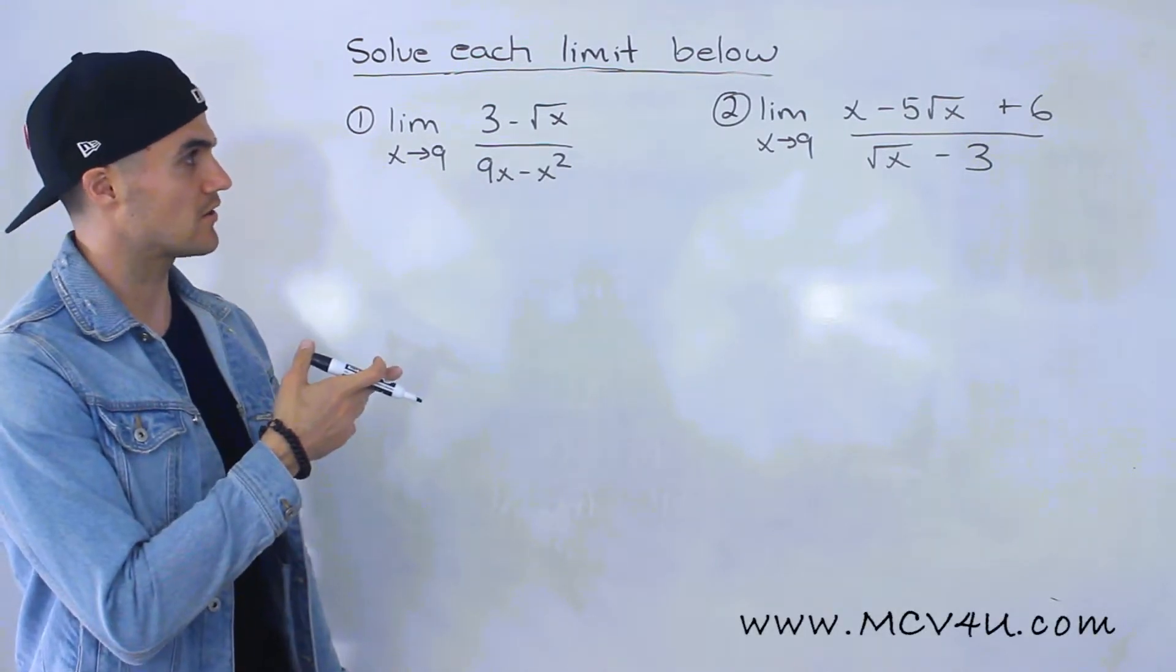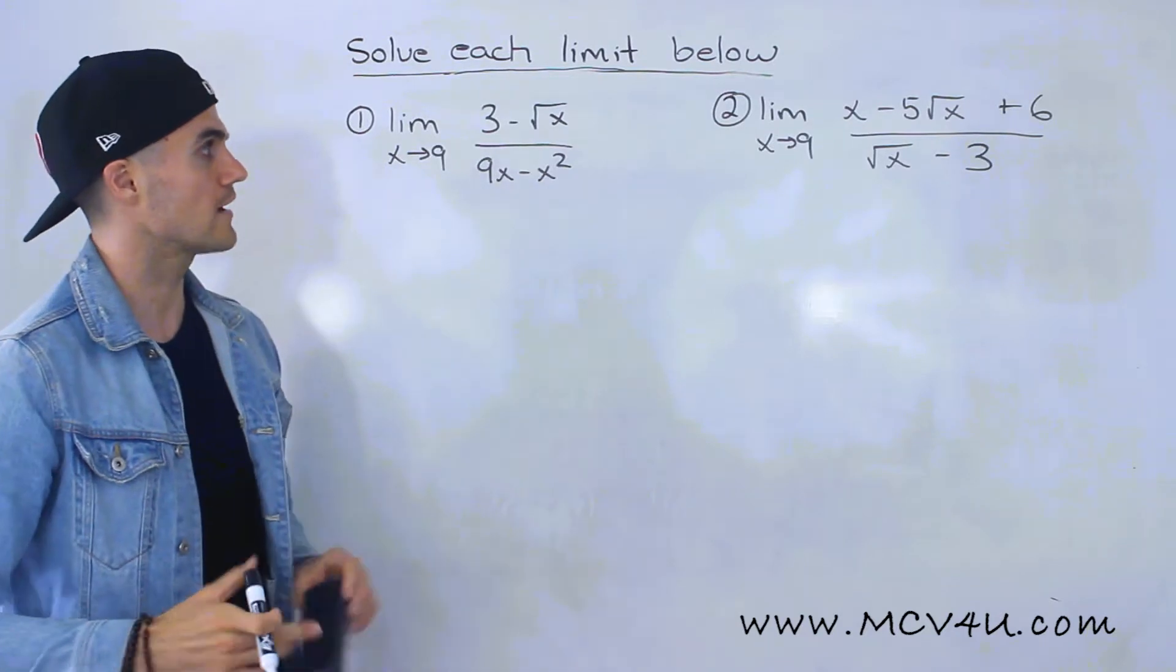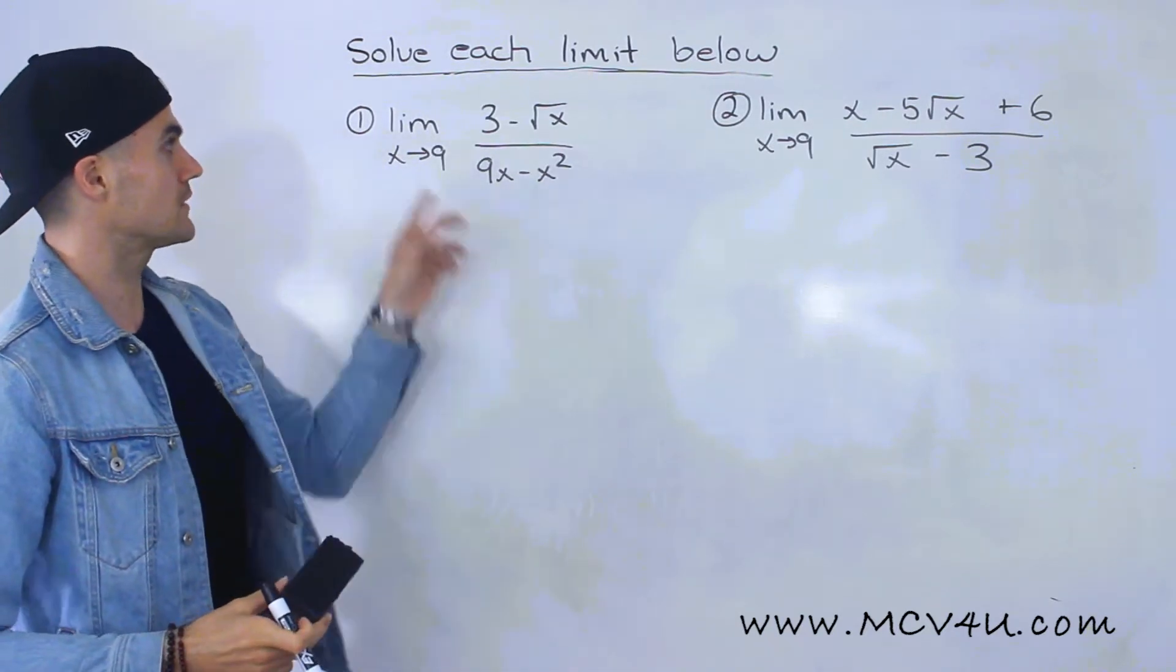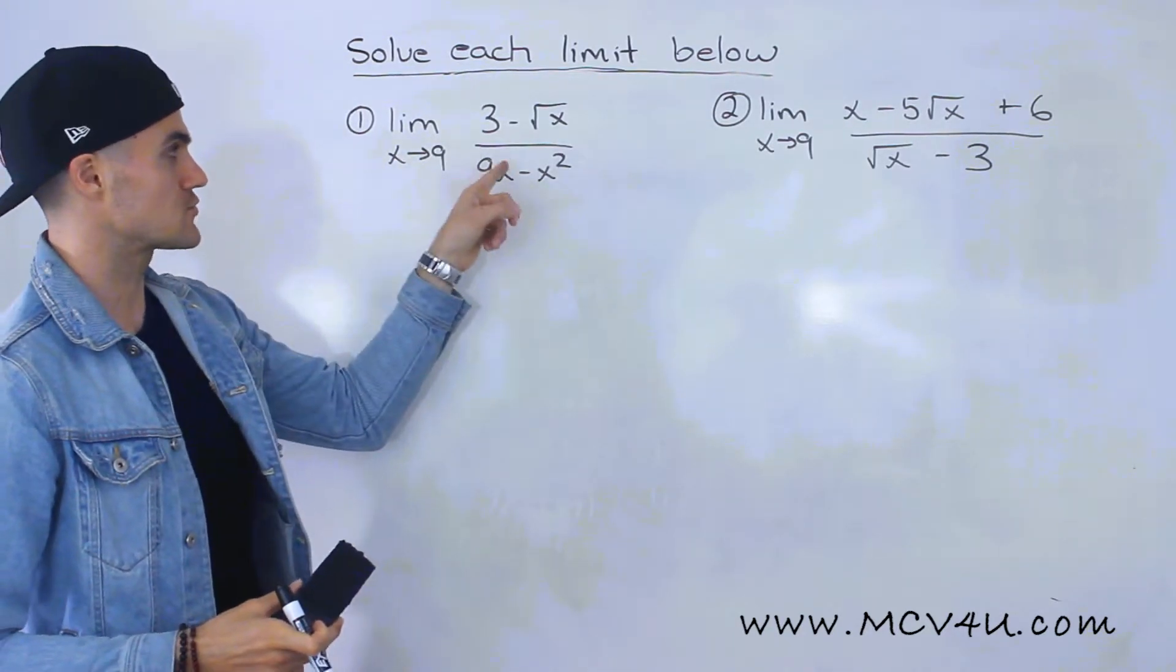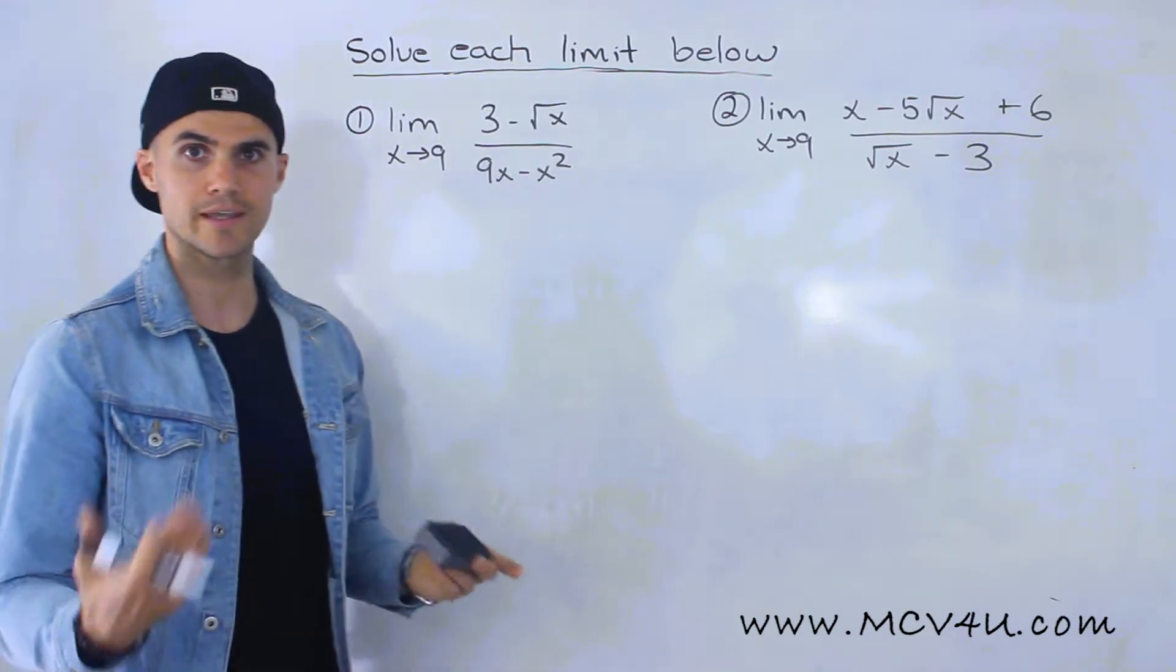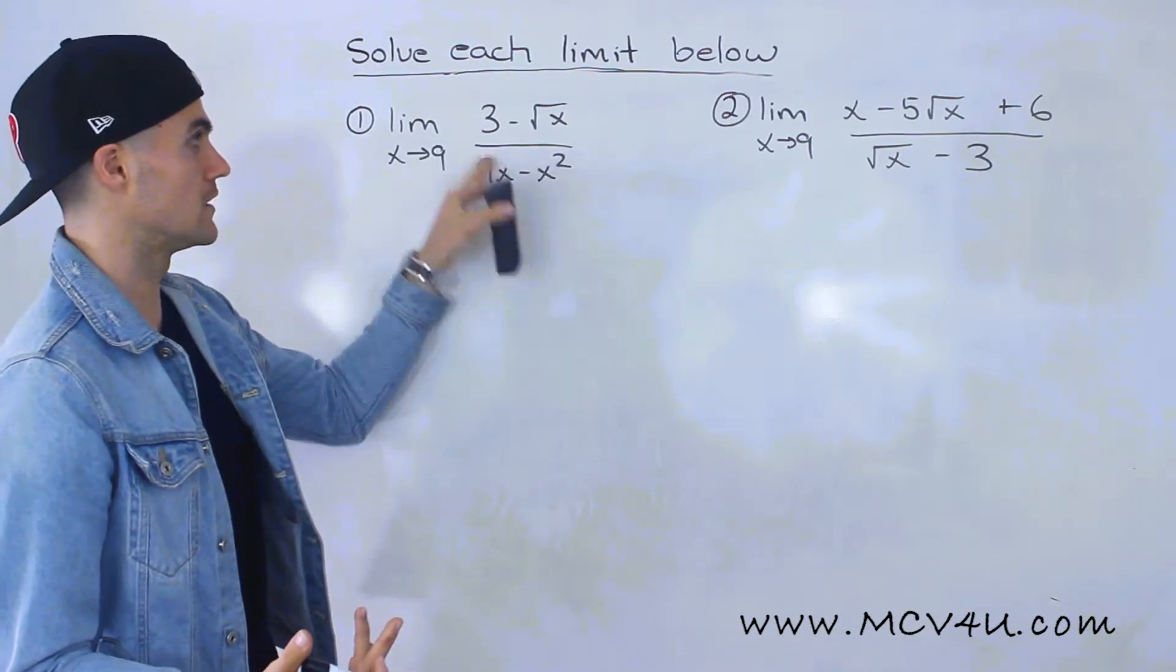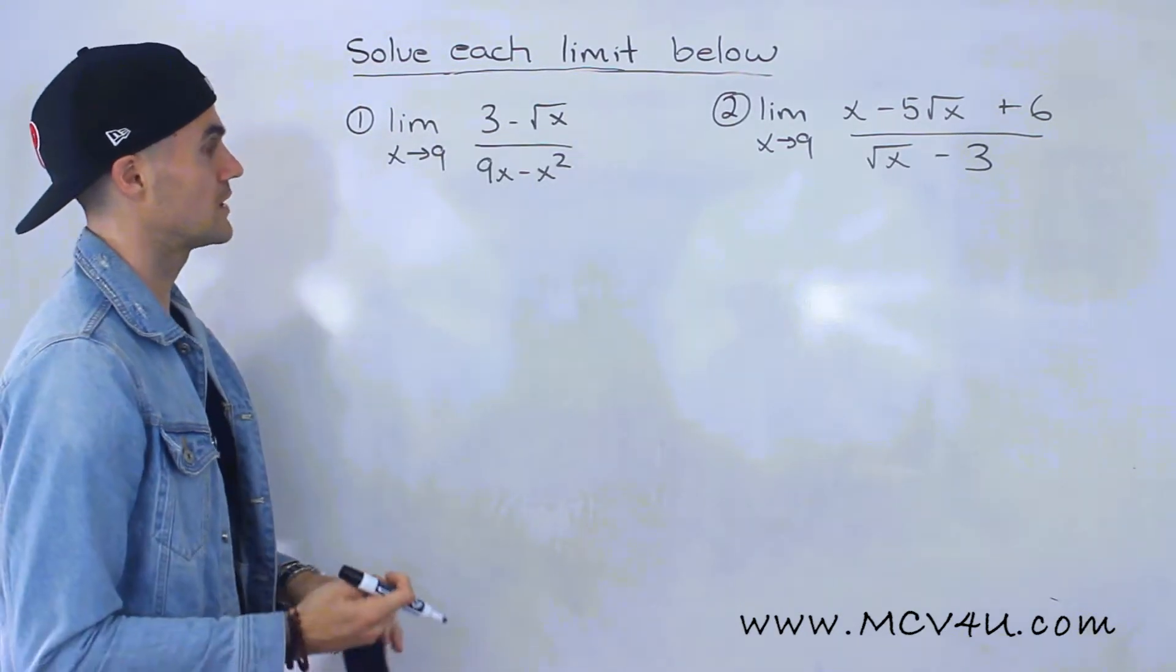Notice that both of these limits are in similar formats because they both contain the square root of x. The first limit is the limit as x approaches 9 of 3 minus root x over 9x minus x squared. We can't plug in 9 directly because the denominator would be 0, and the numerator would be 0 as well.